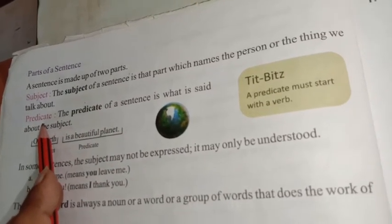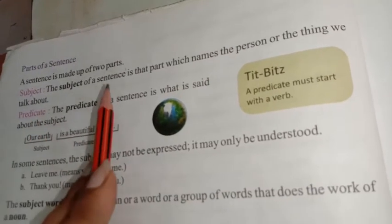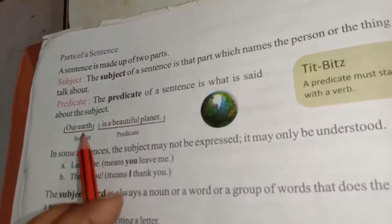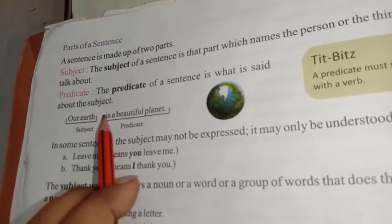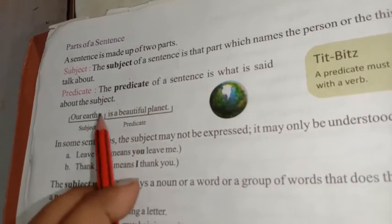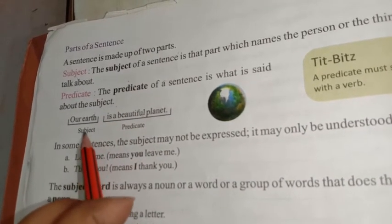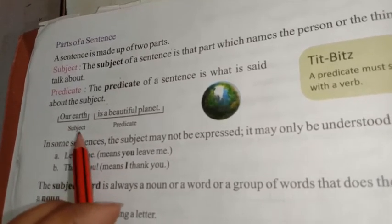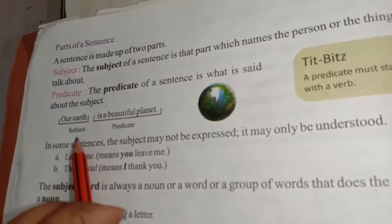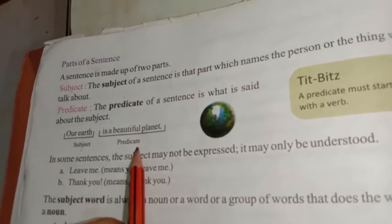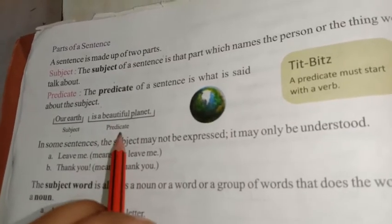Predicate क्या होता है? जिसके बारे में — मतलब subject के बारे में — कहा जाता है। जैसे example दिया है: 'Our Earth is a beautiful planet.' तो 'Our Earth' क्या है? Subject है — यानि इसके बारे में बात हो रही है। और 'is a beautiful planet' — यह आपका predicate है — इसके बारे में यह बताया जा रहा है।